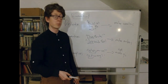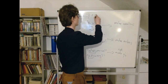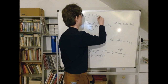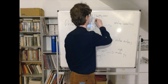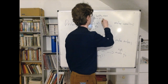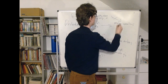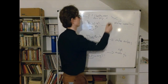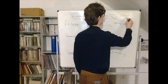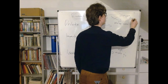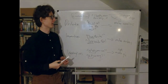Performatives — like 'I hereby name this ship...' — are not used to make an assertion. According to Austin, they're used to name a ship. And naming a ship is a very different thing from making an assertion.